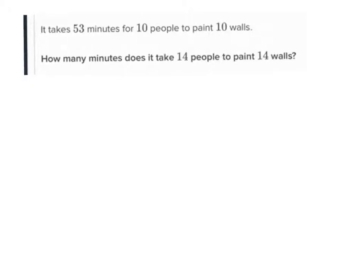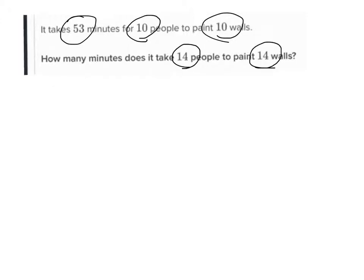In this example: it takes 53 minutes for 10 people to paint 10 walls. How many minutes does it take for 14 people to paint 14 walls? The answer is going to be 53, because here you've got 10 people painting 10 walls, and there you've got 14 people painting 14 walls — you have 1 person per wall.